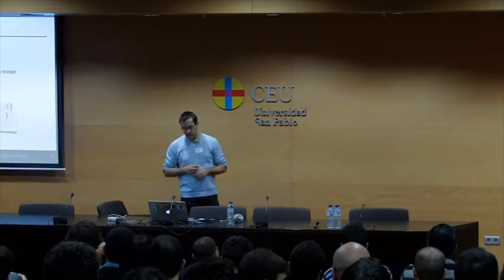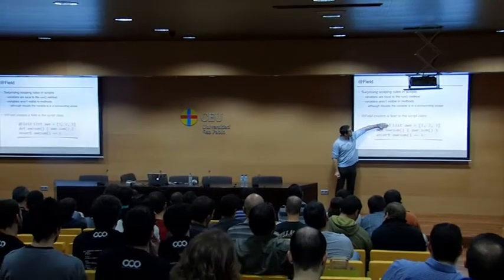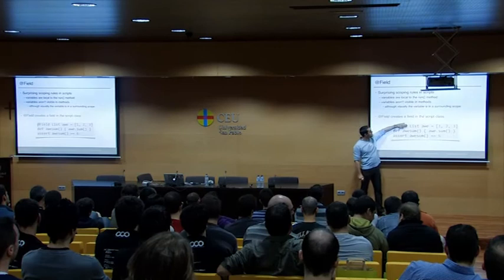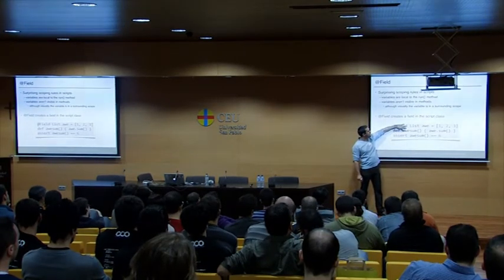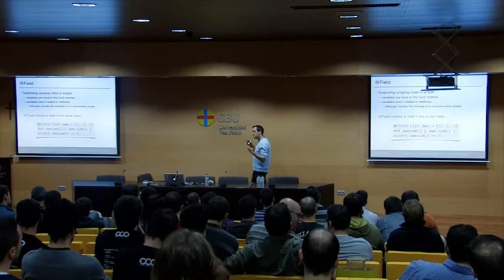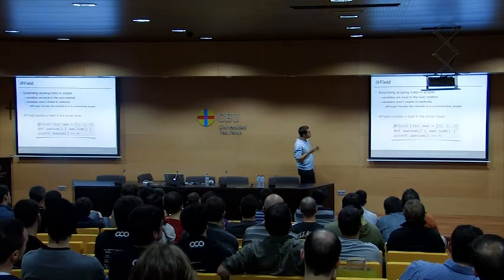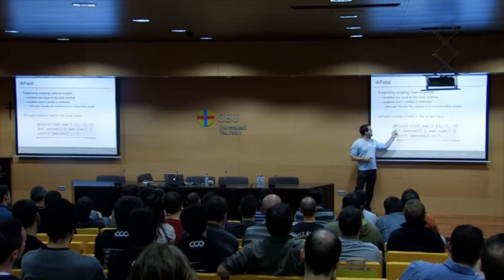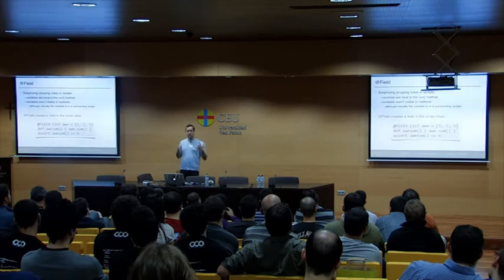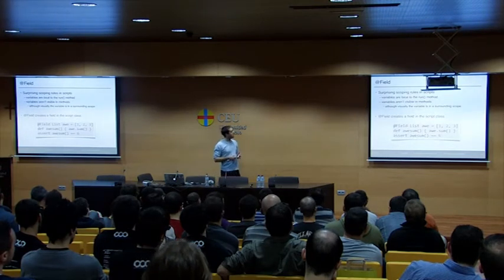With the @Field transform: when you define a list in a script and want to use it from within a method, Groovy complains because the definition is part of the implementation of a "run" method inside your script instance — the variable isn't available to all methods. With @Field, that variable is not a local variable of the run method but becomes a field of the script class, making it accessible from other methods.